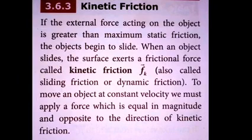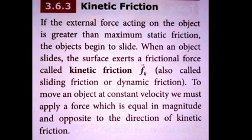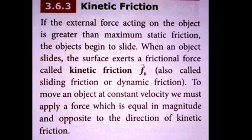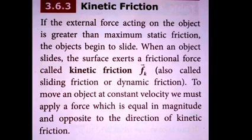Next, we are going to see kinetic friction — the second type of friction. Kinetic means movement. The study of friction when an object is moving is known as kinetic friction. If the external force acting on the object is greater than the maximum static friction, the object transitions from rest to motion — that is static friction — and when the force produces maximum movement, it becomes kinetic friction. When an object slides over a surface, the frictional force exerted is called kinetic friction, denoted by fk. To move an object at constant velocity, we must apply a force equal in magnitude but opposite in direction to the kinetic friction.